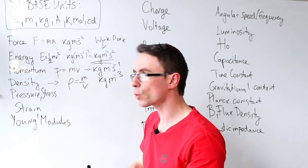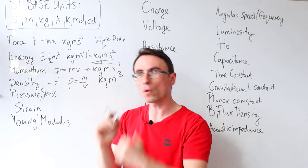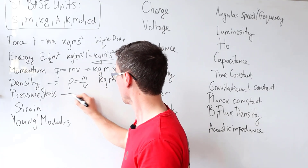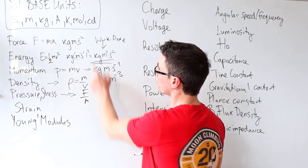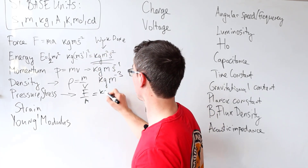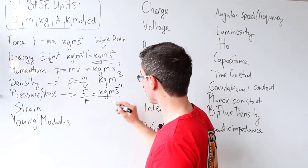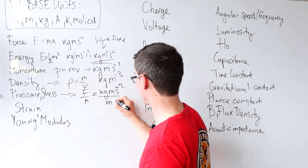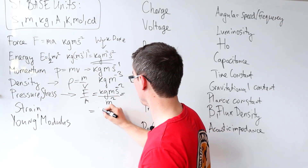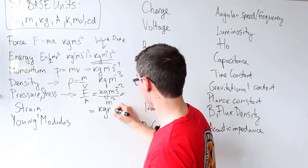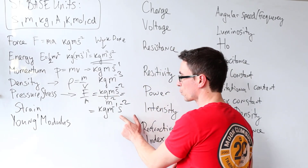Pressure and stress have the same SI base unit because they're both force per unit area. The base unit for force was kg m s⁻², divided by the base unit for area which is meters squared. This leaves kilograms m to the power of minus one s to the power of minus two.